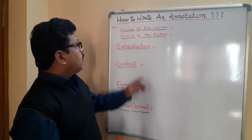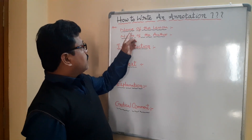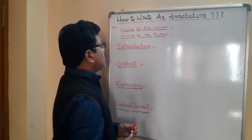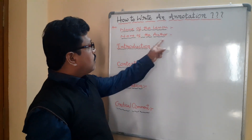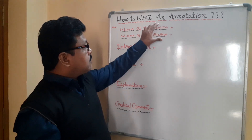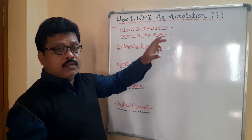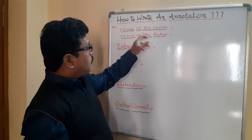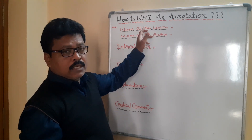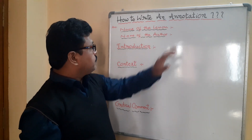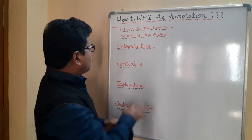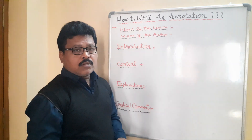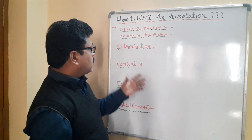Now, how to write an annotation. First of all, start the answer like this: name of the lesson and name of the author. For poetry, write the name of the poem and name of the poet. Then you start the introduction, also called a reference.